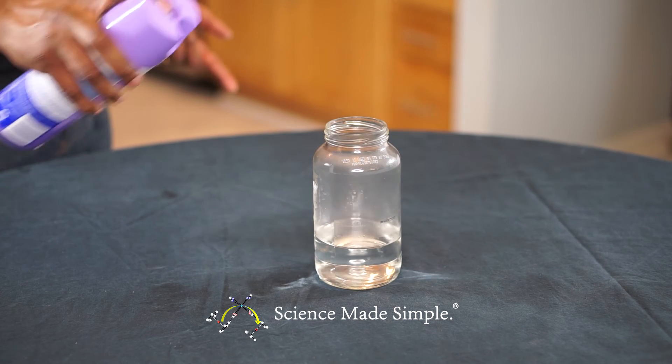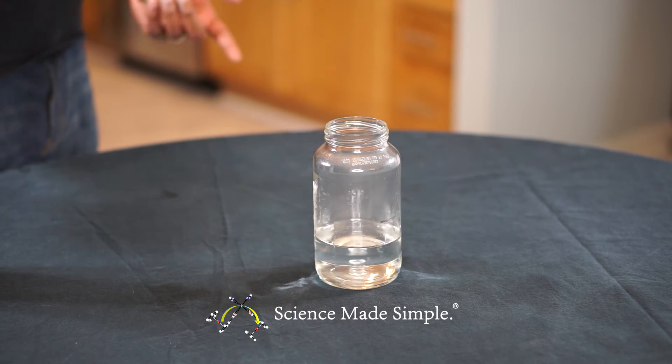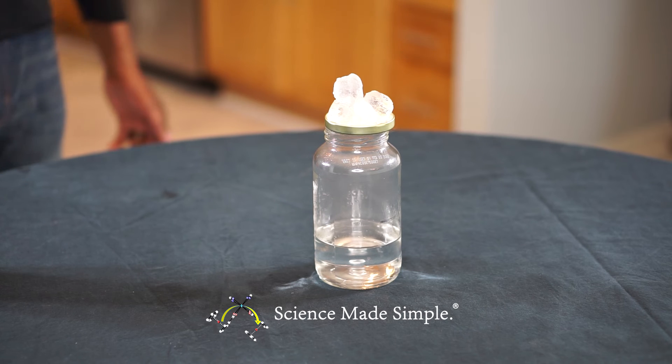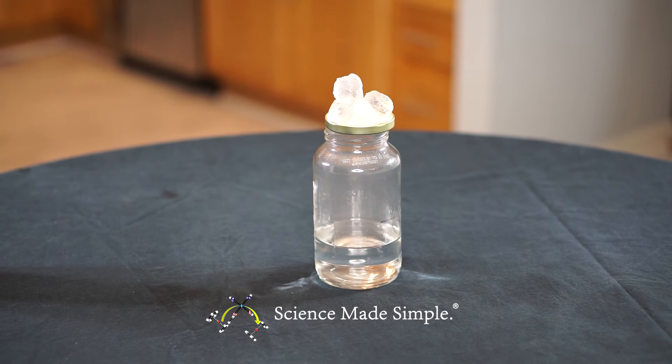Spray the Lysol directly into the jar for about a second. Now, quickly place the metallic lid on top of the jar and place the ice on top of it. Notice that my lid is actually upside down in order to prevent the melting ice from making a wet mess.